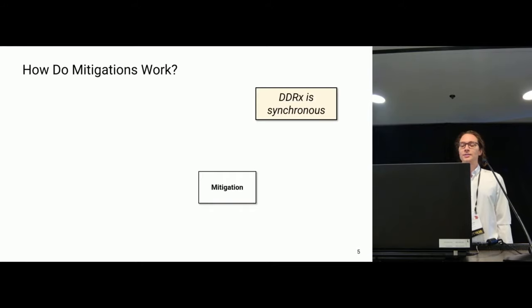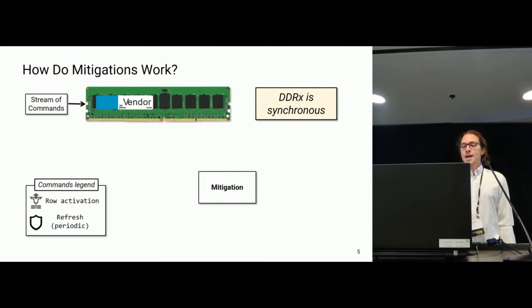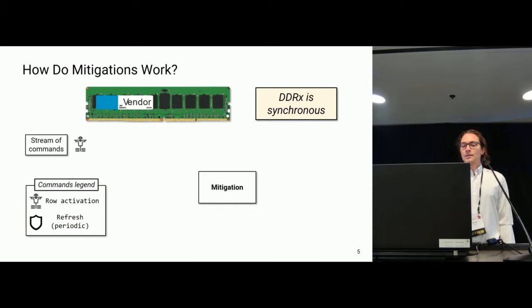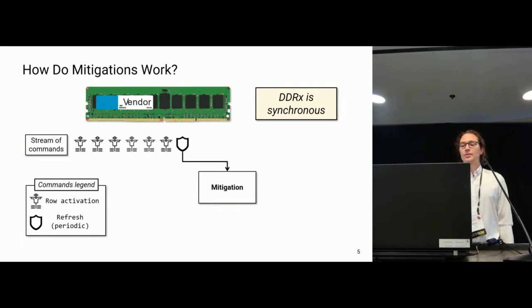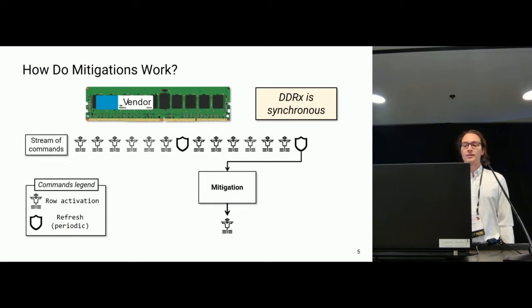How do mitigations work? DDR is a synchronous protocol, which means there is a stream of commands sent to a device. The commands we are interested in are row activation and refresh. The refresh is a periodic command necessary for the device to work correctly. As activations come in, the row address is used by the mitigation, and during the refresh operation, the mitigation does additional work refreshing rows considered to be victims or under attack. This is called Target Row Refresh, and it is repeated over time.